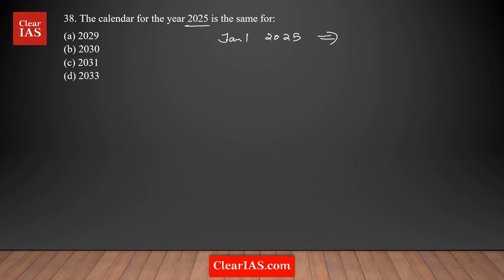I'm assuming Jan 1st, 2025 as the reference date. You don't need to remember exactly what day it is — you can assume any day. I'm assuming it as Wednesday, but you can take any other day; it's completely fine. This is your reference date, and I'm assuming it's Wednesday. Also, 2025 is a regular year — not a leap year — with 365 days.